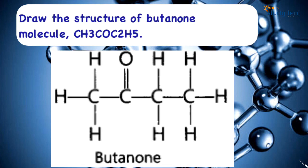The structure is CH3-CO-C2H5. This is the electron dot structure of butanone. Butanone has 4 carbon atoms and the ketone group, which is the C=O functional group. CH3 has three hydrogen atoms on the first carbon, then the C=O double bond, then the C2H5 group fills the remaining valences following tetravalency.